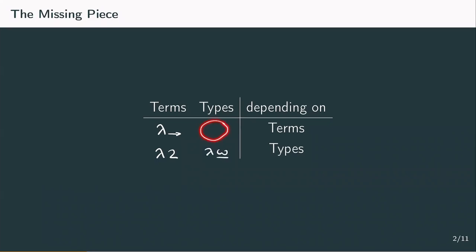Obviously we're missing one dependency, types depending on terms, and this is what we're going to explore in this system lambda p.